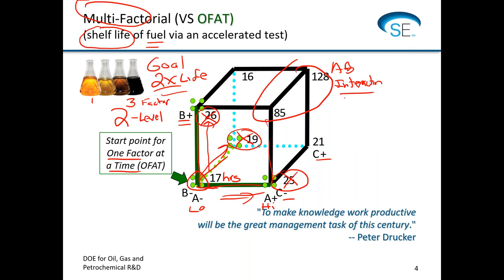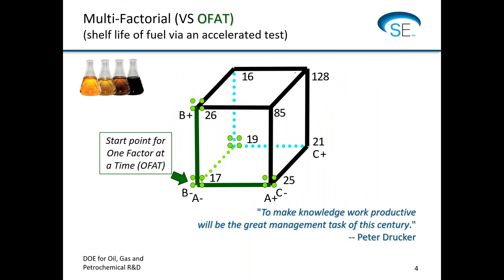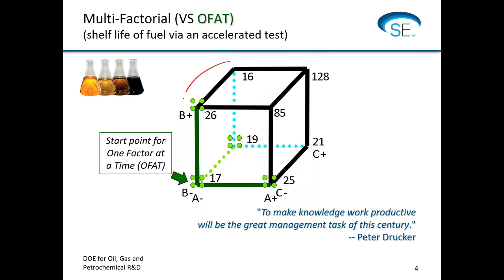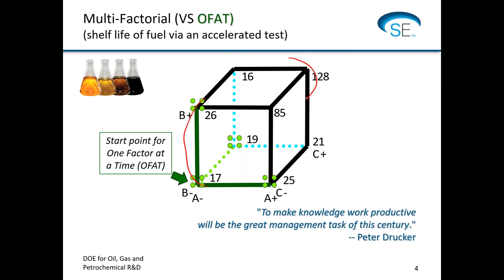It's very important to use multi-factor rather than one-factor, first and foremost because we can uncover interactions only by doing this multi-factor approach — never by one factor at a time. There's also a more subtle advantage: built-in averaging of different levels of each factor. Looking at the right side of the cube, we have four runs at the A-high level and four at the A-minus level, giving a more powerful estimate of the main effect of A. Similarly, B and C each have four-by-four comparisons. That power advantage is something in addition to the effectiveness of seeing the interactions.